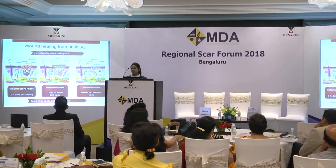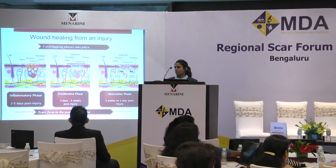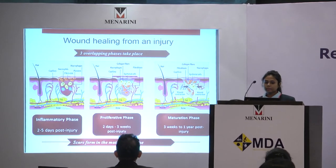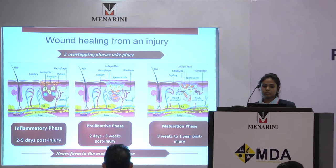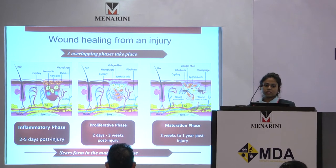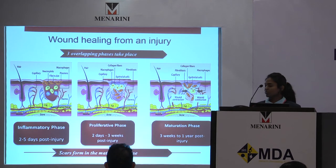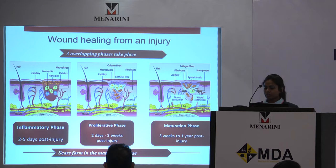So what is a scar? A scar is nothing but abnormal fibrous tissue deposition due to abnormal tissue repair, regulating, and regenerative mechanisms. As wound healing has already been discussed in detail by a previous speaker, wound healing is divided into three phases: inflammatory phase, proliferative phase, and maturation phase. Scar formation happens in the maturation phase, and that is where we have to be conscious and initiate treatment modalities.